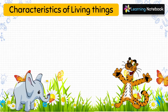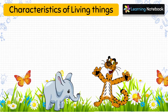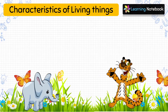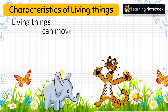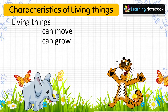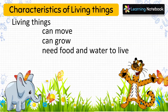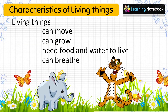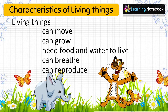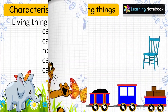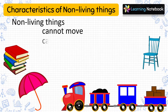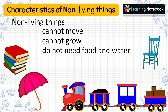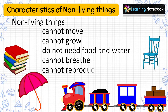There are some characteristics of living things that differentiate them from non-living things. Living things can move, they can grow, they need food and water to live, they can breathe, and they can reproduce. While non-living things cannot move, they cannot grow, they do not need food and water, they cannot breathe, and they cannot reproduce.